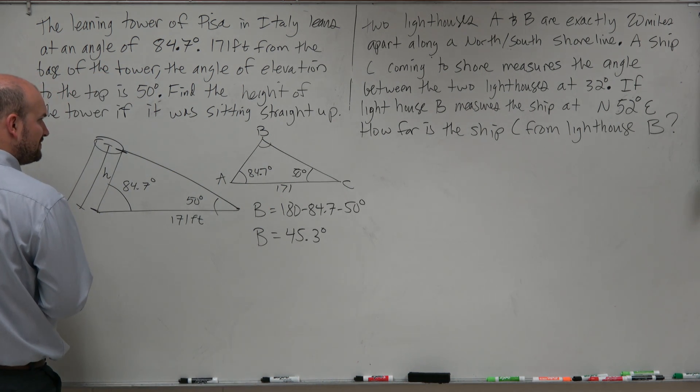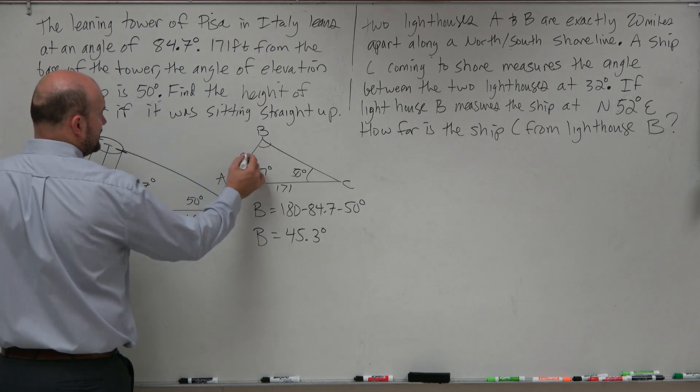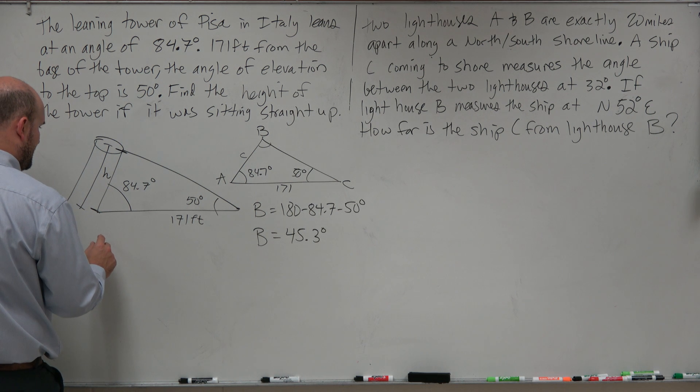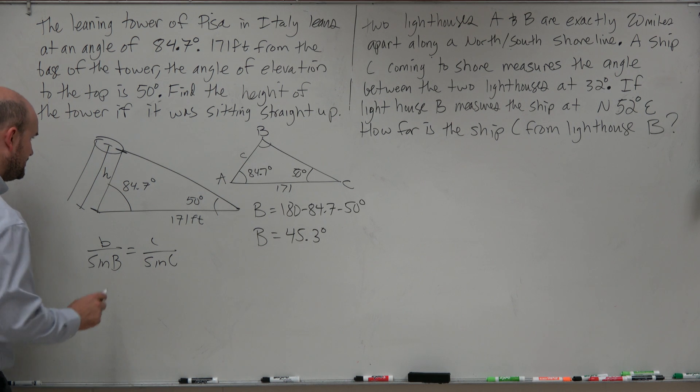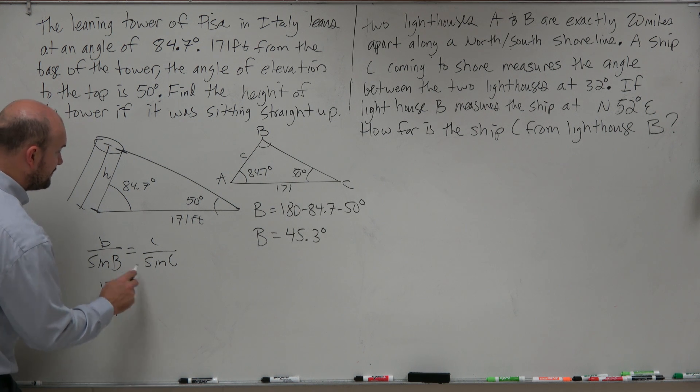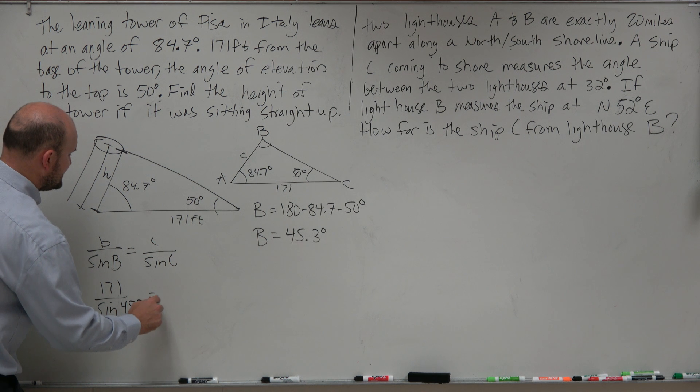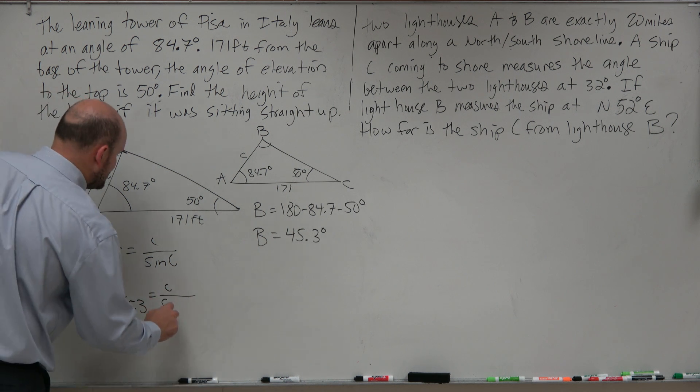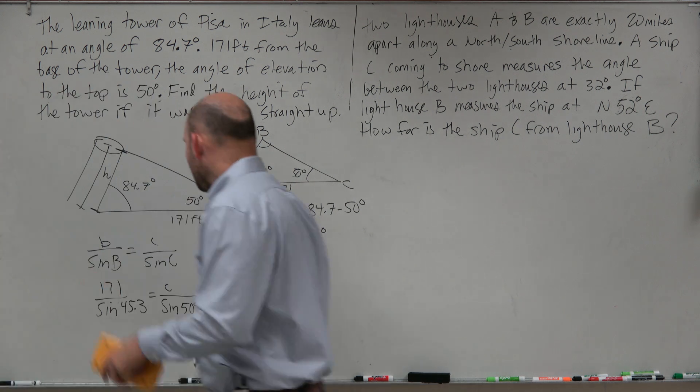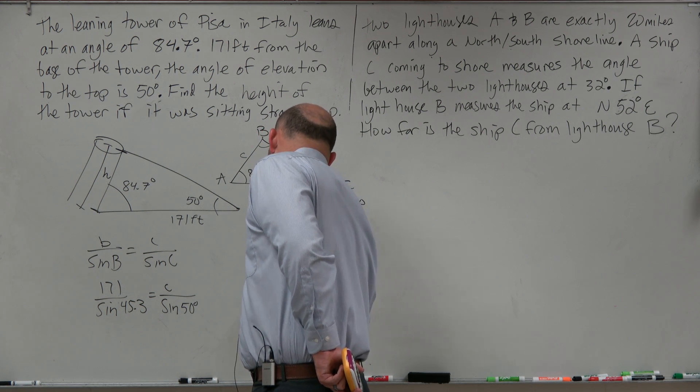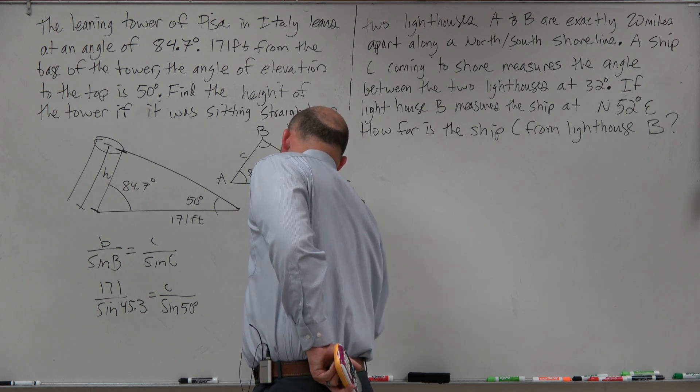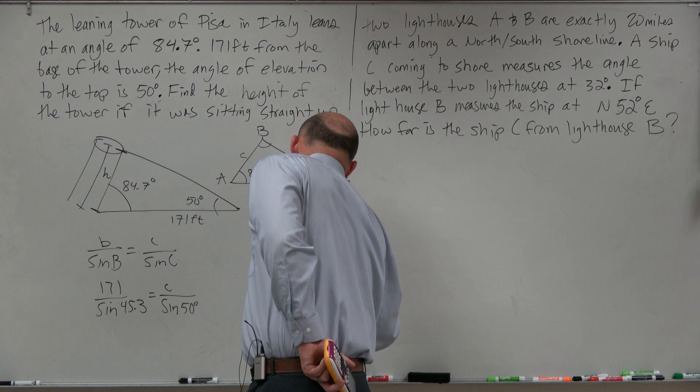So therefore, let's see, we're going to be using solving for the side, so we're actually looking for H, so we're looking for little c. So I'm going to put that on the top, so I'm going to do B over sine of B is equal to C over sine of C. So that's going to be my law of sines that I'm going to use, and B we know is 171 divided by the sine of 45.3 degrees. So therefore, I can just multiply the sine of 50 degrees on both sides, and I get C is equal to 171 times the sine of 50 degrees all over the sine of 45.3 degrees.